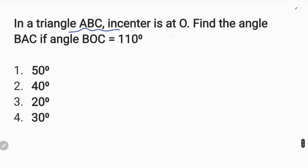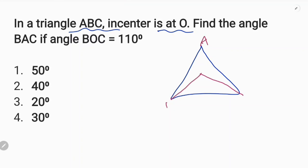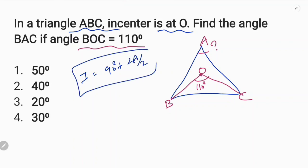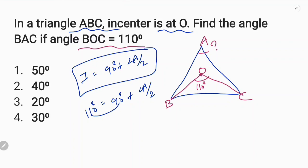This triangle is A, B, C. In-center is at O. Find the angle B, C. This is in-center O. To get the angle of B, C — in-center O. B, C, A. At O. P by 2. 90 is 90. 90 is 20. Then the angle is equal to 20. 20 into 40.